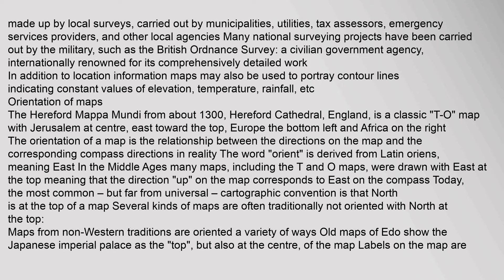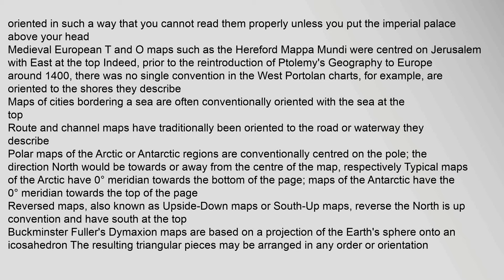Medieval European T and O maps such as the Hereford Mapa Mundi were centered on Jerusalem with east at the top. Prior to the reintroduction of Ptolemy's geography to Europe around 1400, there was no single convention in the west. Portolan charts, for example, were oriented to the shores they describe. Maps of cities bordering a sea are often conventionally oriented with the sea at the top. Route and channel maps have traditionally been oriented to the road or waterway they describe. Polar maps of the Arctic or Antarctic regions are conventionally centered on the pole.